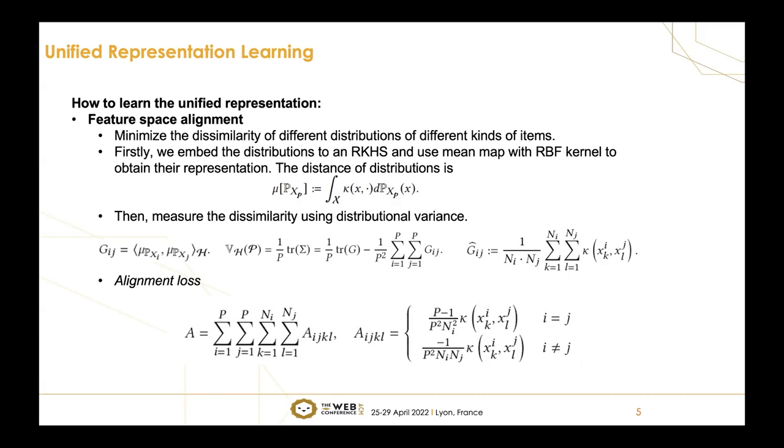Then, we measure the dissimilarity using distributional variance. G is the gram matrix, a matrix of distance between distributions. DV here is the distributional variance, a measurement of dissimilarity between these distributions. To investigate this further, we propose the alignment loss. The alignment loss is A here, where i,j are the indices of distributions and k,l are the indices of samples in their distributions. Finally, we minimize the alignment loss so we can align all these features in the unified feature space.